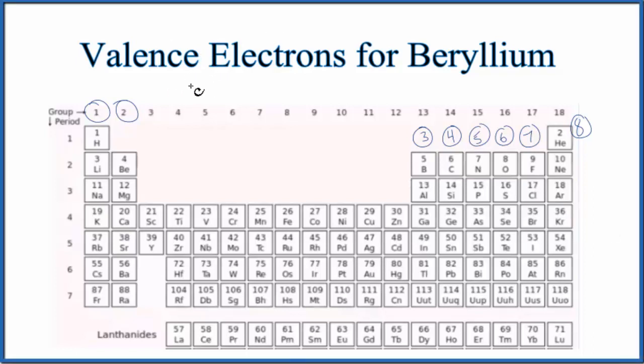In this video, we'll determine how to find the number of valence electrons for beryllium, BE. So there are two ways we can figure out the number of electrons in the valence shell here for beryllium.